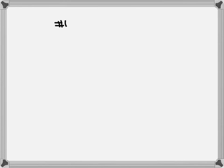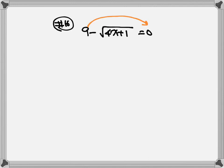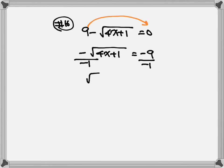Now, let's look at number 16. Number 16: we have 9 minus square root of 4x plus 1 is equal to 0. We're going to move the 9 to the other side. So, negative square root of 4x plus 1 is equal to negative 9. Do not write no solution, because we want to get rid of that negative sign in front of the square root. So, divide everything by negative 1.